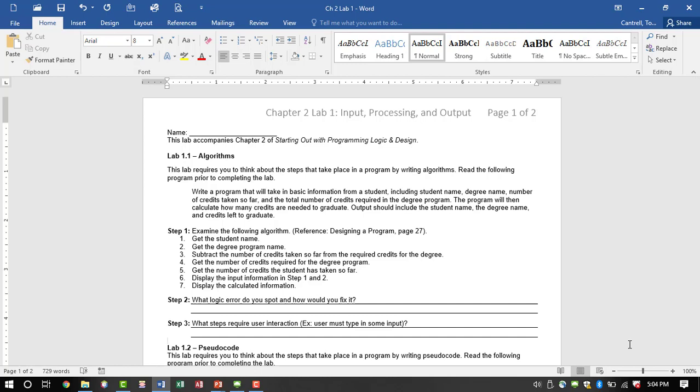If you read this carefully - I'd read it two or three times to understand it - but if you read it, it tells you what the input is: student name, degree name, number of credits taken so far, total number of credits required in the degree program. It tells you what you need to calculate: credits needed to graduate. It tells you what you need to output: student name, degree name, and credits left. So you've got your four variables you need for the input. It tells you you need to calculate credits left or whatever you want to call it. So you're going to have five variables, output statement. You can put them in three separate output statements, or you can put them all in one output statement and use the concatenation to go down to the next line.